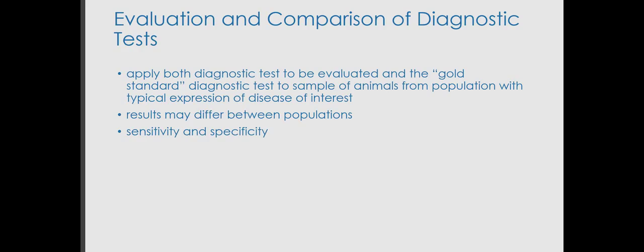Now, if we want to evaluate and compare a diagnostic test, we always have to apply two tests, which complicates the situation somewhat. One of them is the test that we wish to evaluate, and the other one, which we often call the gold standard diagnostic test, is the one that tells us about the true disease status of the animal. If we want to draw generalised conclusions about the performance of the diagnostic test, we should be performing this work using samples from animals of a population that is typical for the disease of interest.